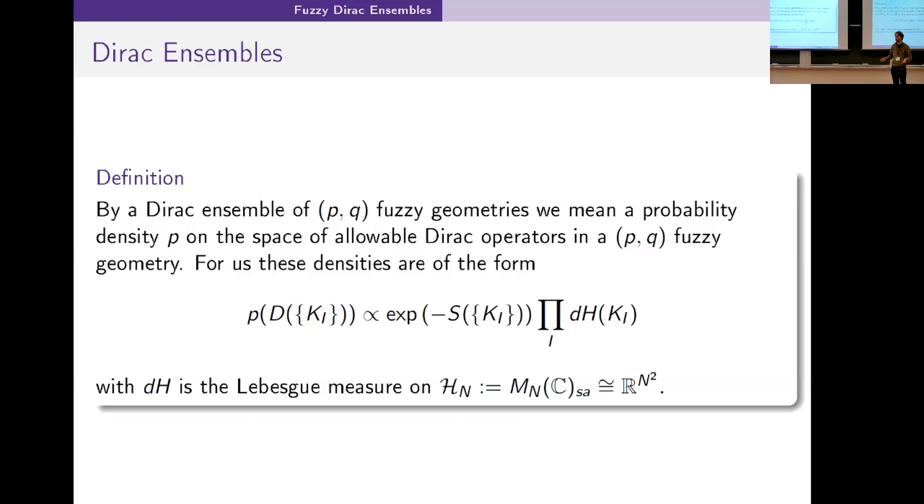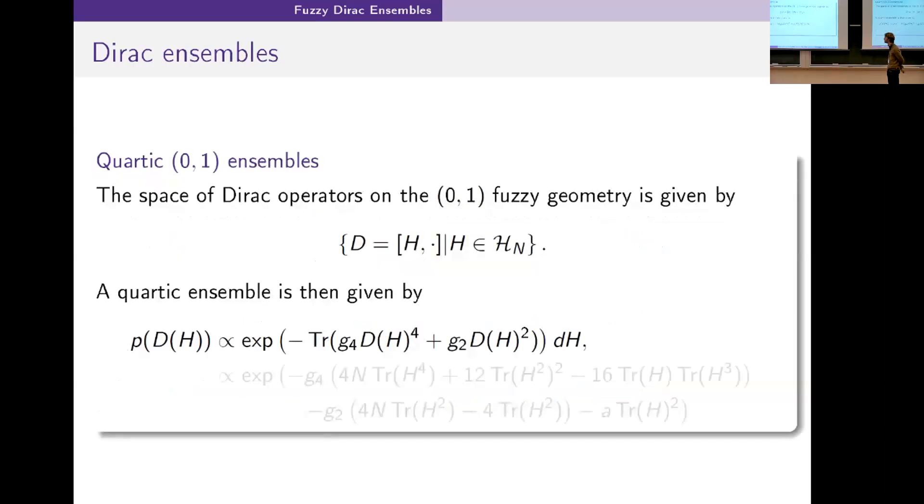In general this gives us a multi-matrix random matrix model. We have a bunch of matrices, these K_i, and we select them via some random process. Multi-matrix random matrix models are very hard, which is why we restrict.